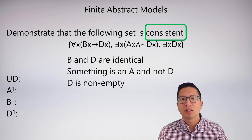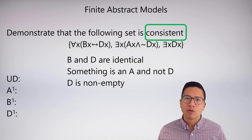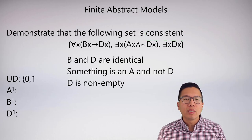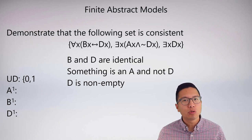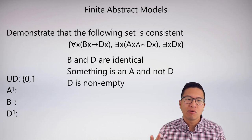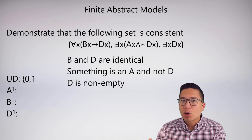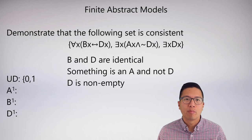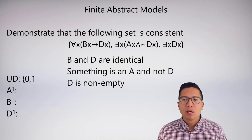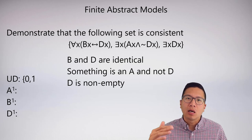Now we're able to construct our finite abstract model. The model will demonstrate consistency by stipulating the meanings of the universe of discourse and the a, b, and d predicates extensionally — defining them in terms of set membership. I always like to start with a universe of two members, and I'll just use zero and one. You could use anything you want, but zero and one are better than alphabet choices because using a or b might confuse us with letters that are syntactically part of our system.